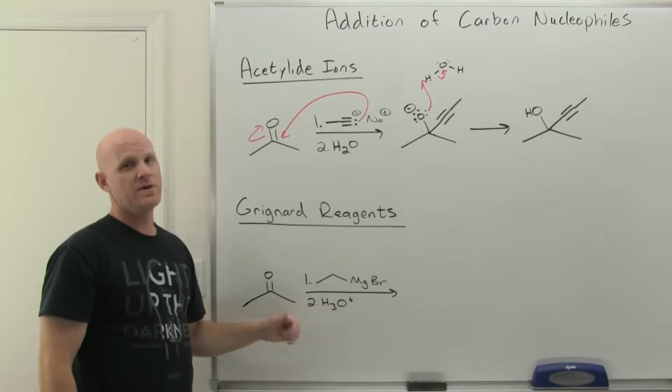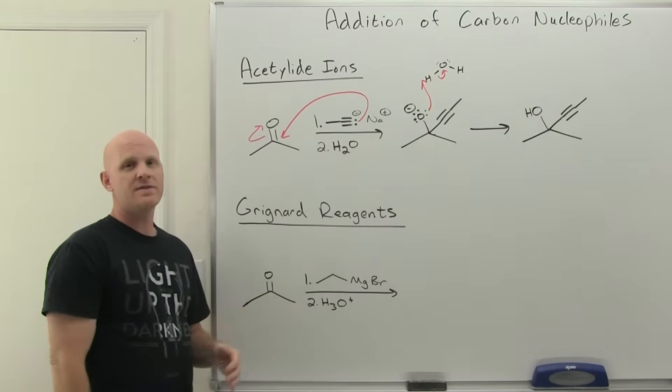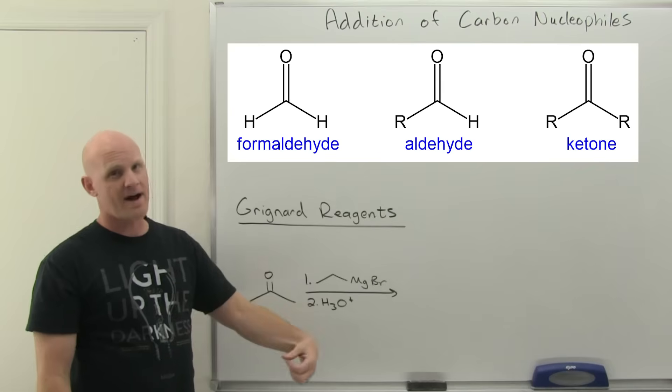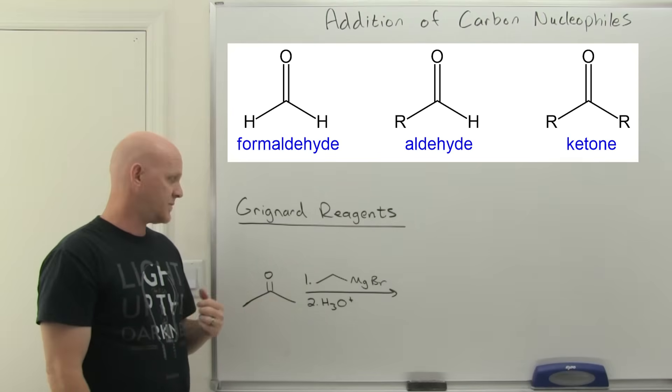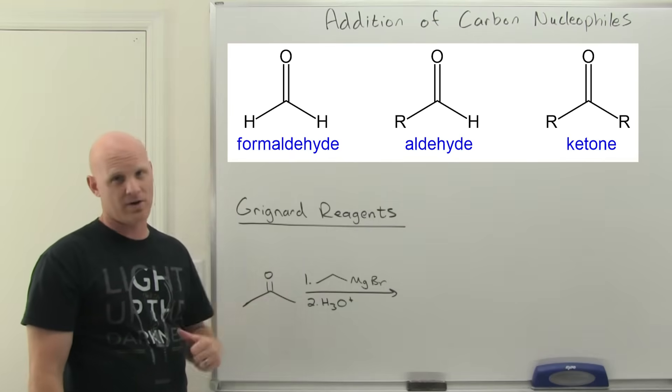And also going to be a review here is the addition of a Grignard. Back in the day, we learned that if we add a Grignard to formaldehyde, we'll get a primary alcohol. If we add it to a regular aldehyde, we get a secondary alcohol. And when we add it to a ketone here, we'll get a tertiary alcohol.